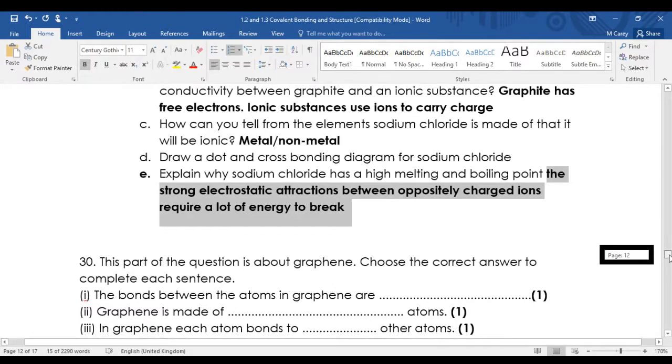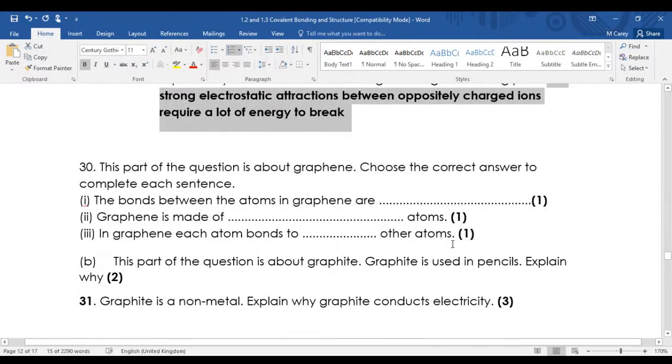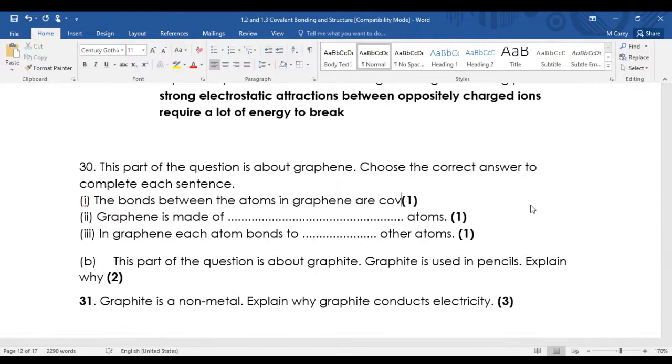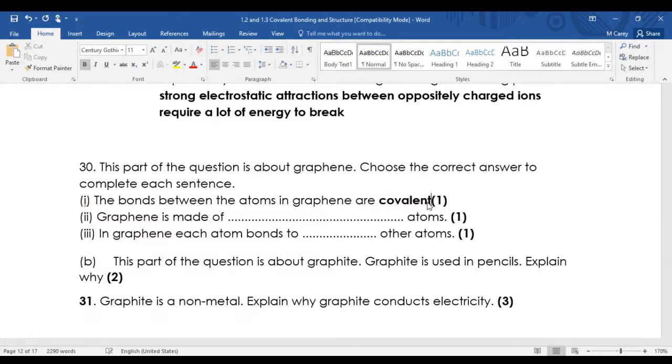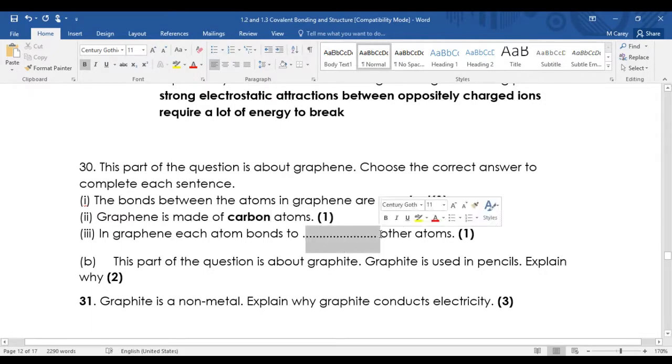The bonds between the atoms in graphene are covalent. Choose the correct answer - I don't know where you're supposed to choose that from, I'm afraid you're on your own here. You could say strong covalent bonds. Graphene is made of carbon atoms, and in graphene each atom bonds to three other atoms.